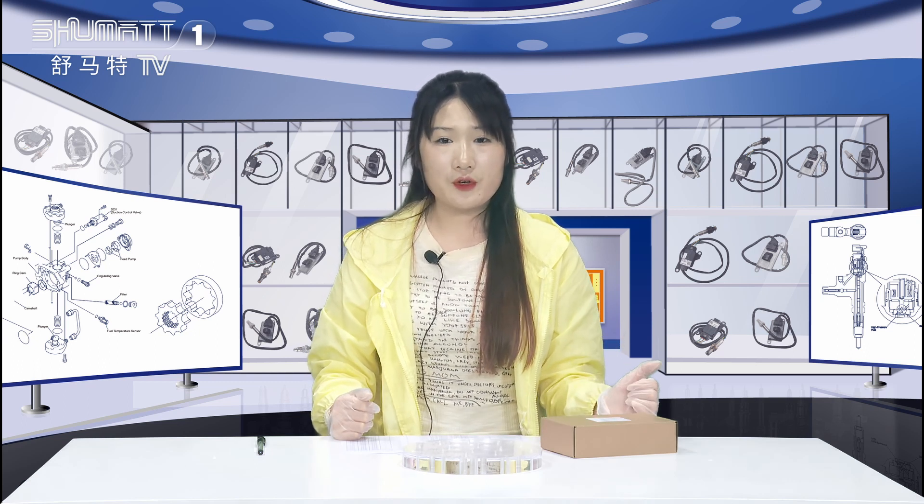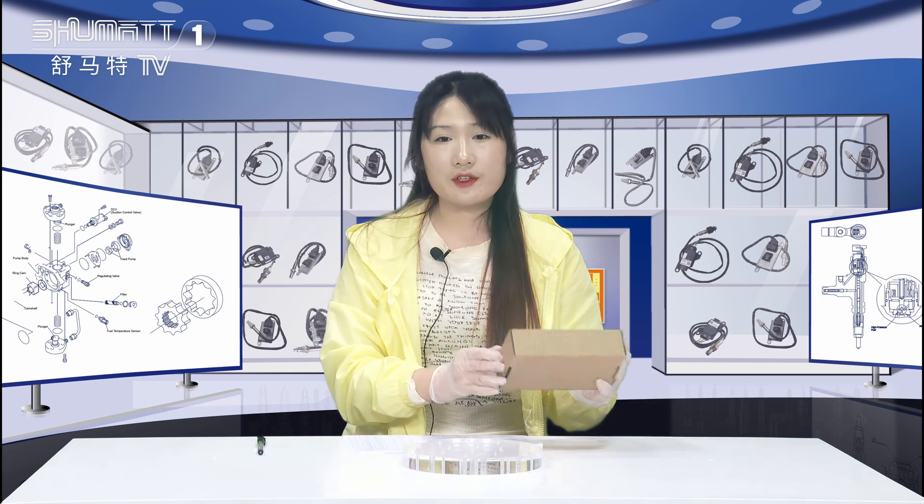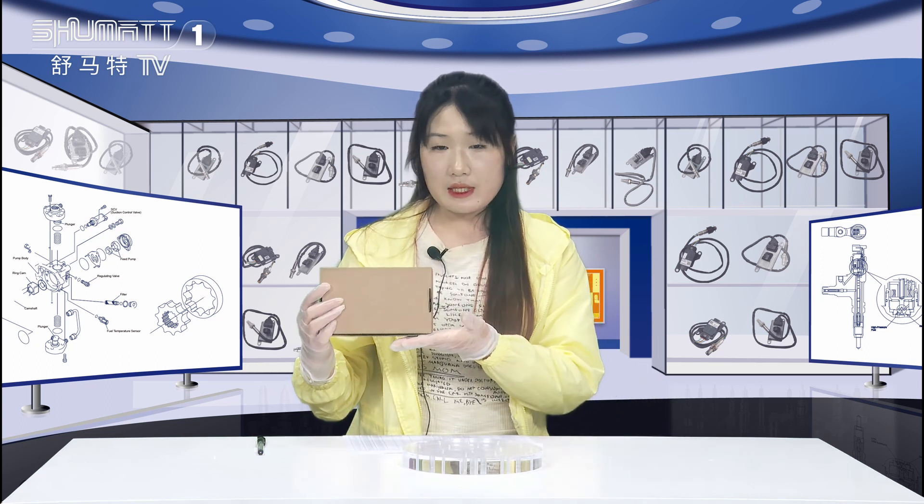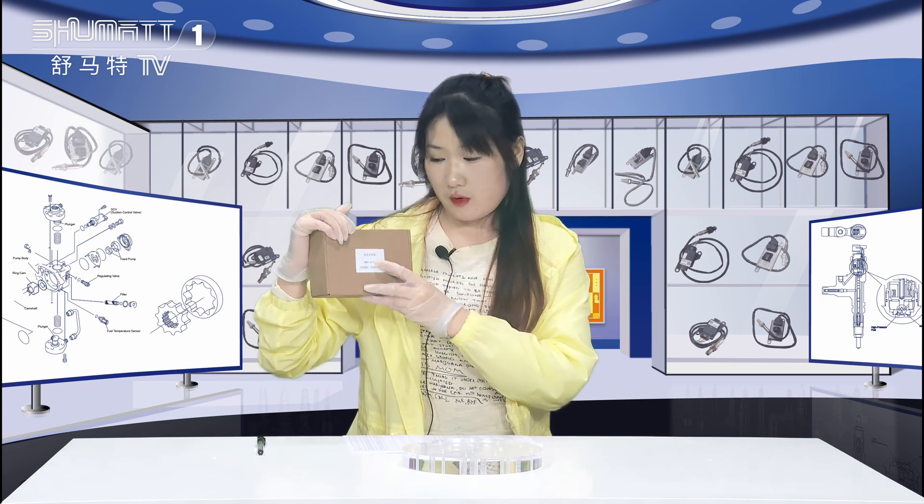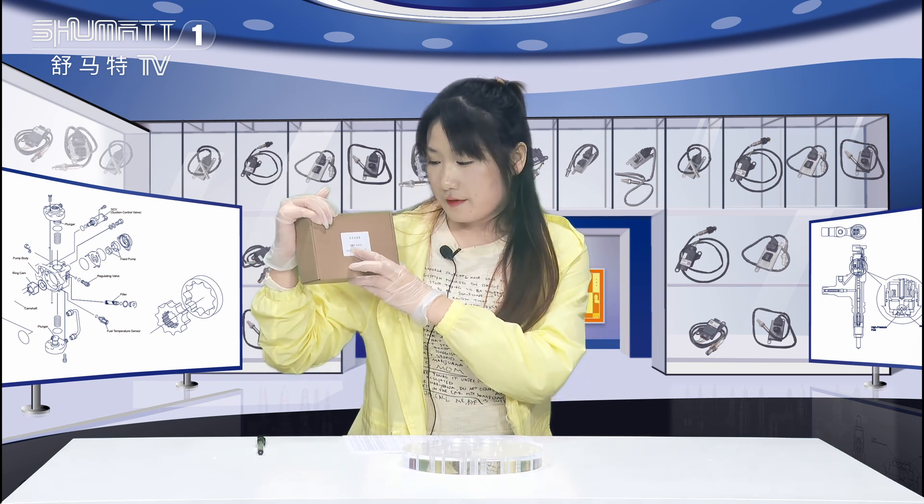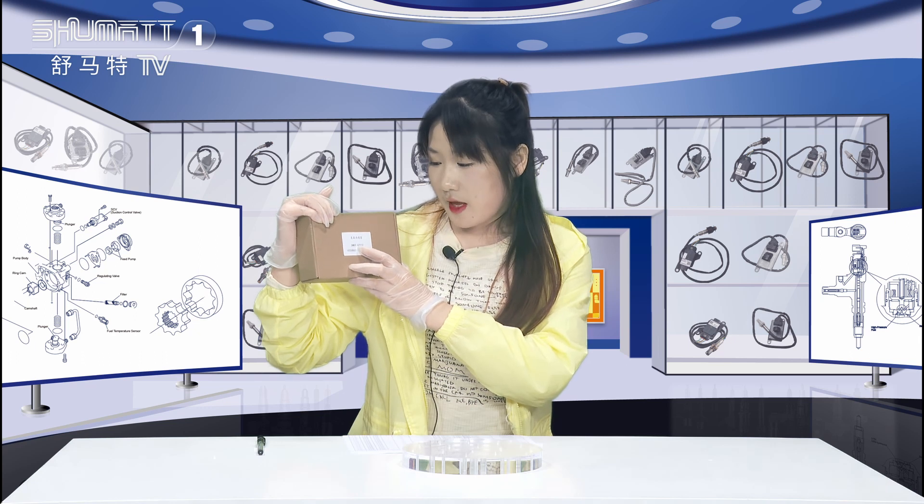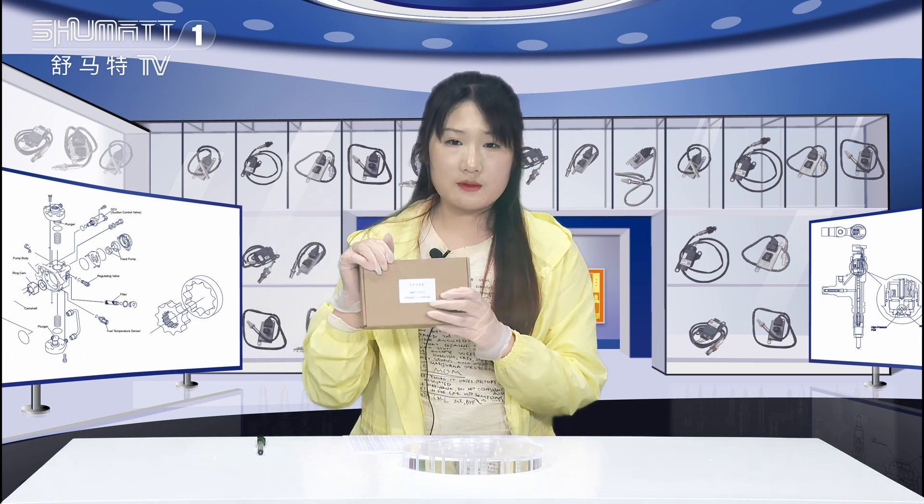Today the product we're going to show you is our nitrogen oxygen sensor. Firstly, the outside packing is this brown box and here is a label with the product code 5WK9-6751C.